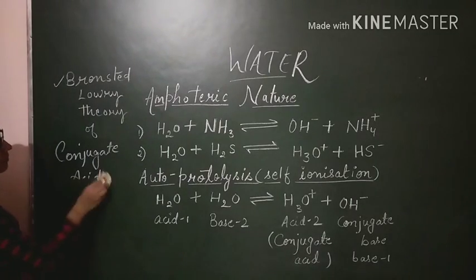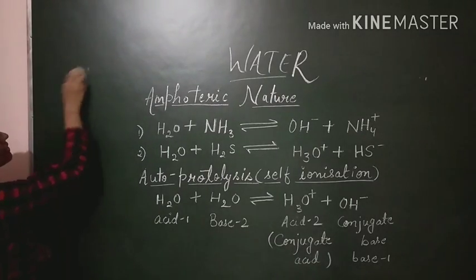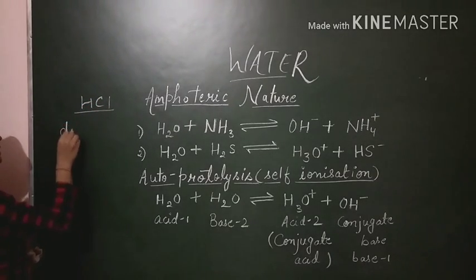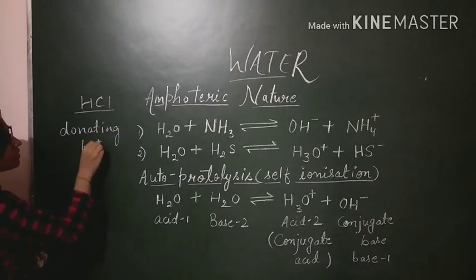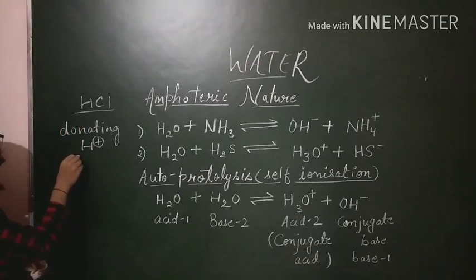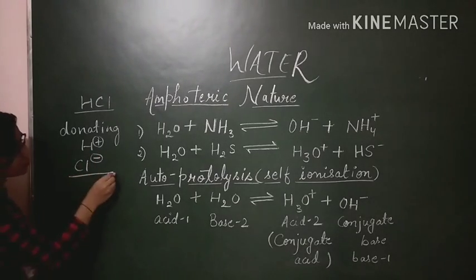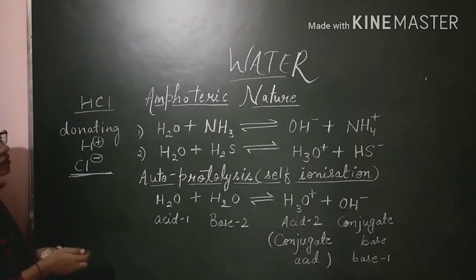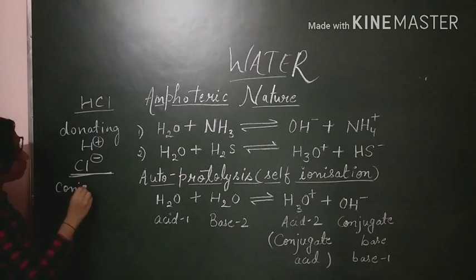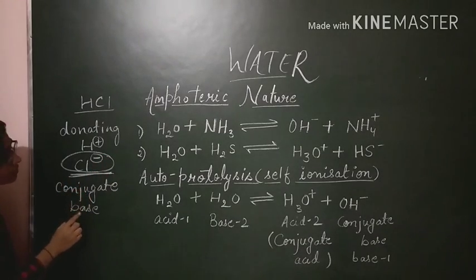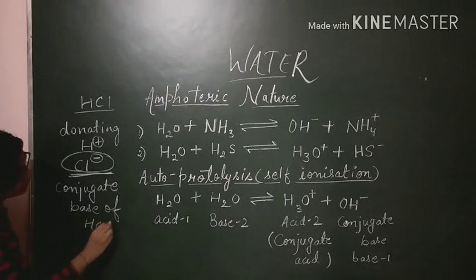Now we will understand conjugate acid and conjugate base. Let's take a simple example — HCl is an acid. After donating H positive, after donating one proton, it will give Cl negative. The species left behind when an acid donates a proton is known as its conjugate base. So Cl negative is the conjugate base of HCl.